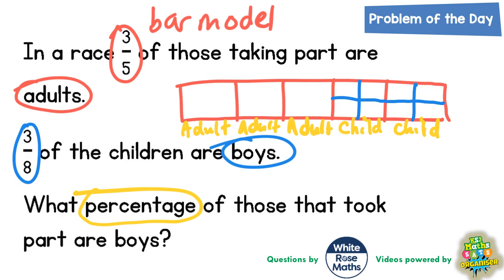Three out of those eight pieces are boys, so we write B, B, B in three out of the eight. Although it doesn't say it, that means the other five pieces must be girls — so G, G, G, G, G.